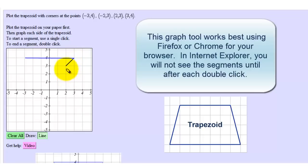The next side starts at this point here and ends at the point negative 2, 3. So again, I'll single click here, move the mouse to the point negative 2, 3, which is here, double click.